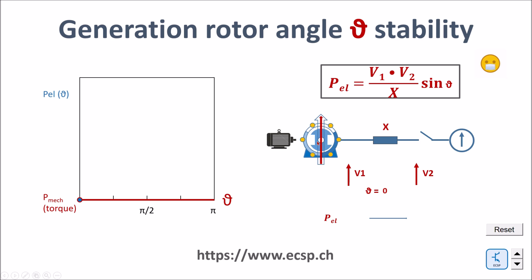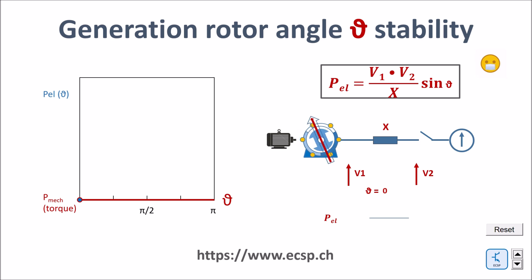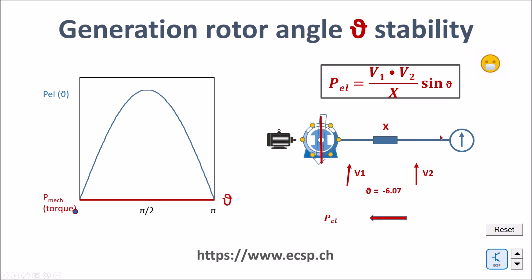As long as the generator is disconnected from the grid, the rotating magnetic field through the stator is only induced by the DC magnetic field from the rotor. This means there is no angle between the rotating magnetic field of the stator and the rotating magnetic field from the rotor, so the angle theta is equal to zero. Let's rotate this rotor — the rotation speed is for 50 Hz and you see that the two arrows are sitting on each other.